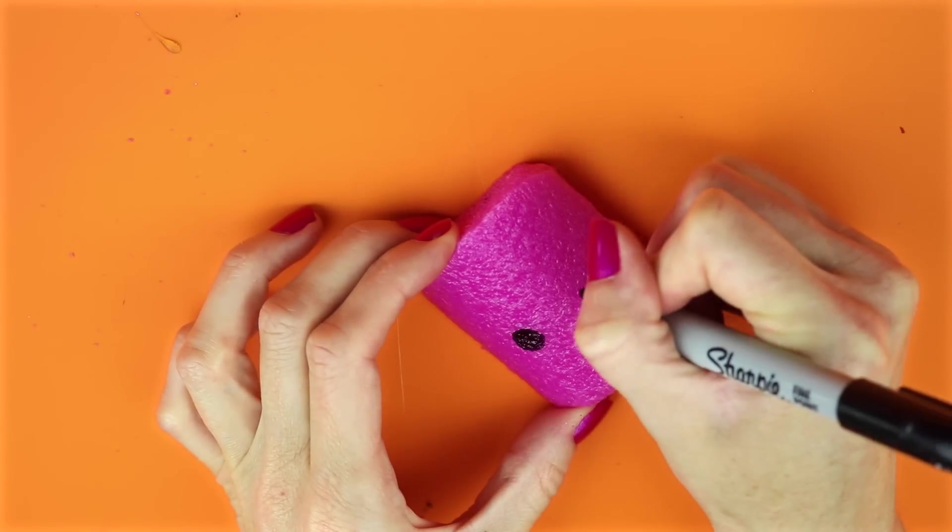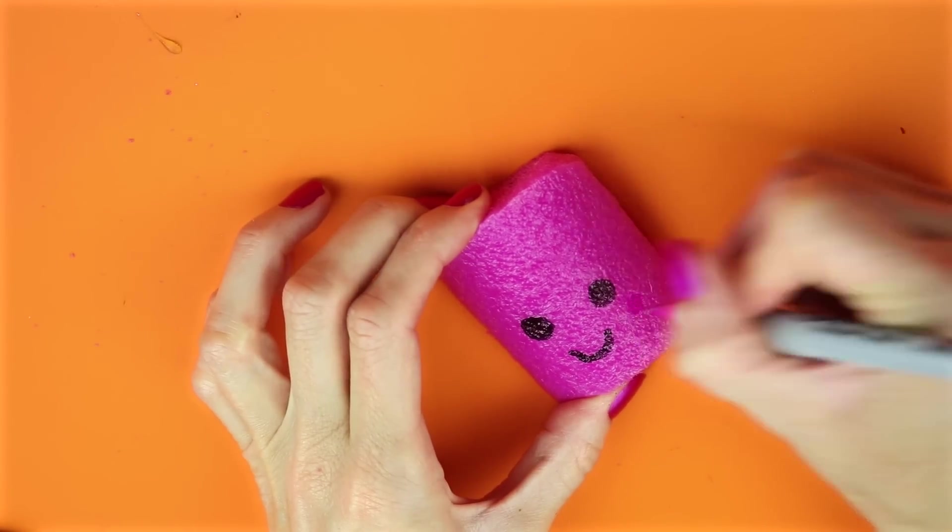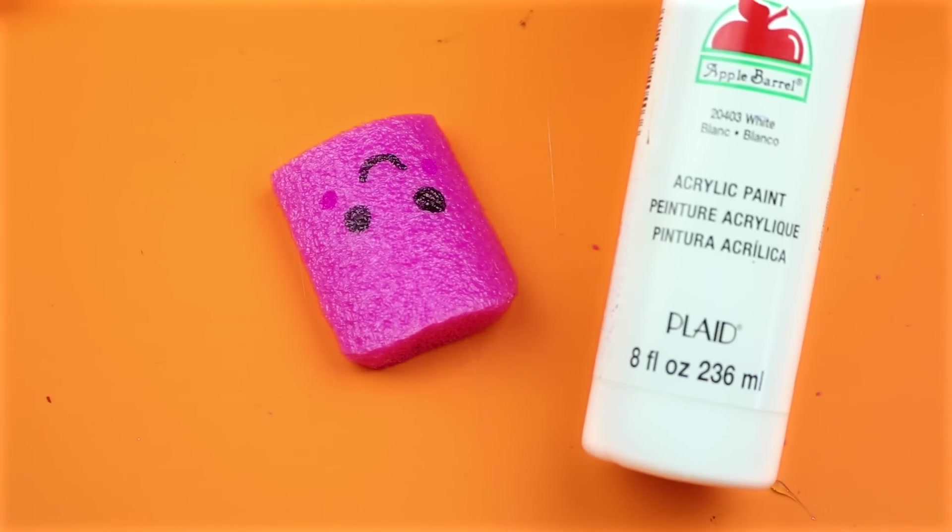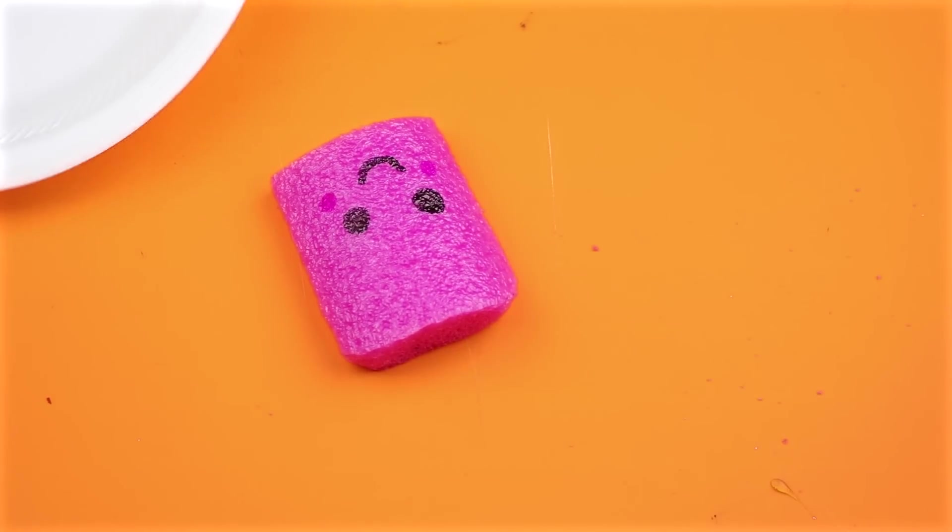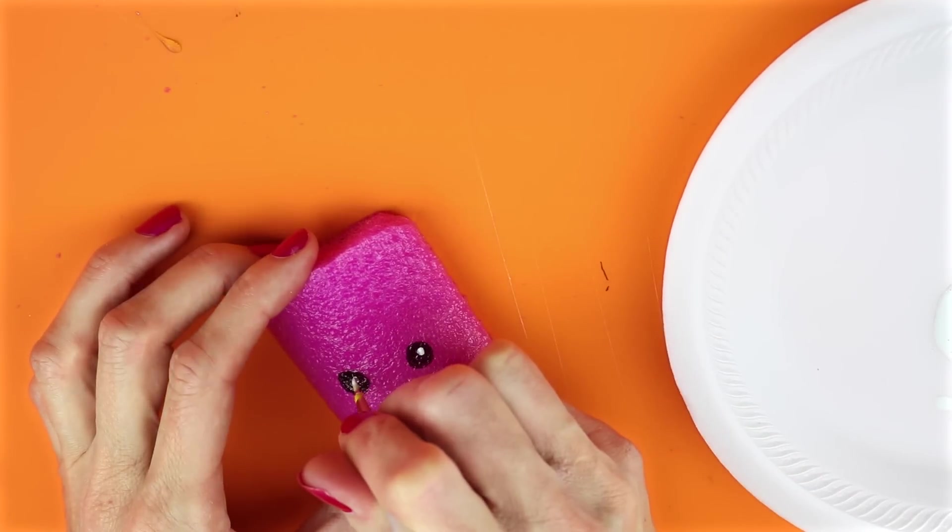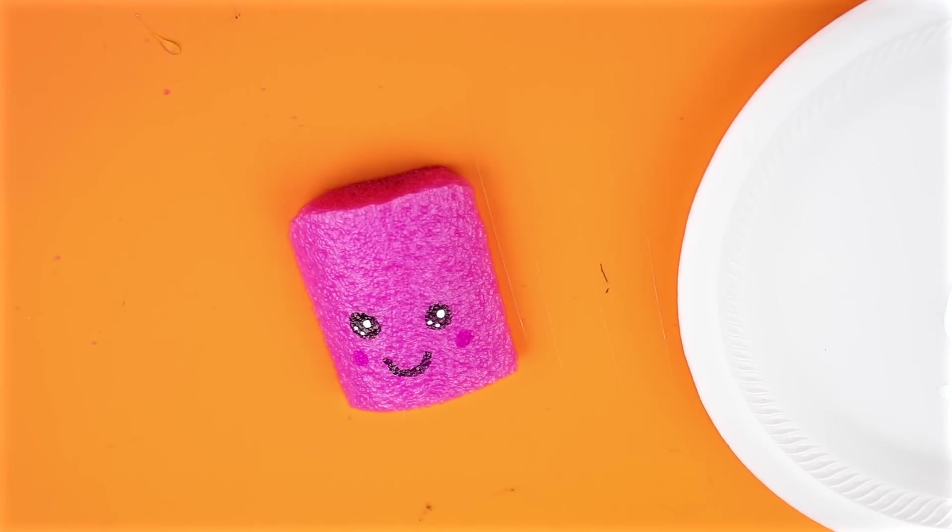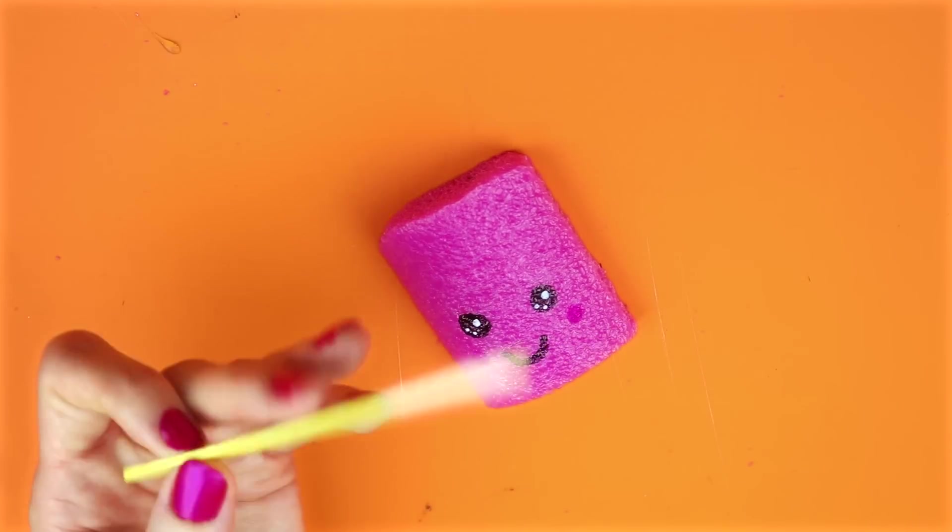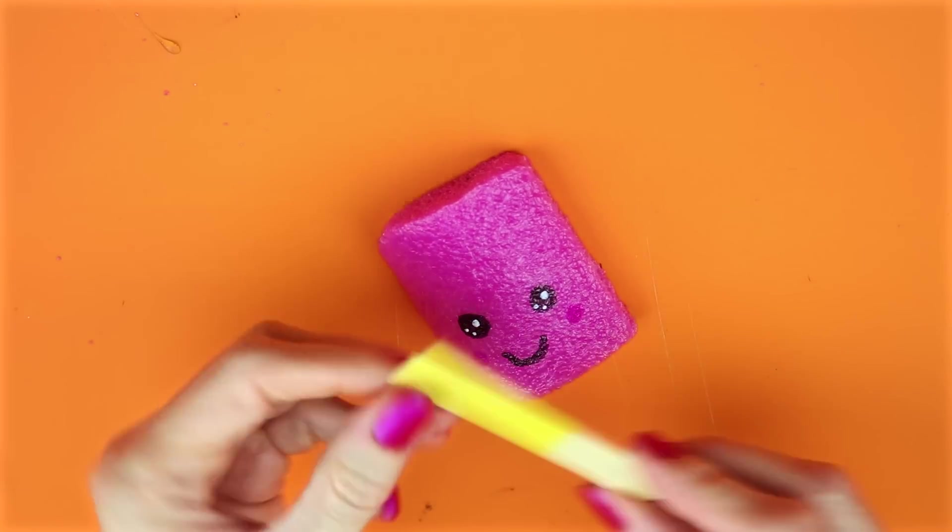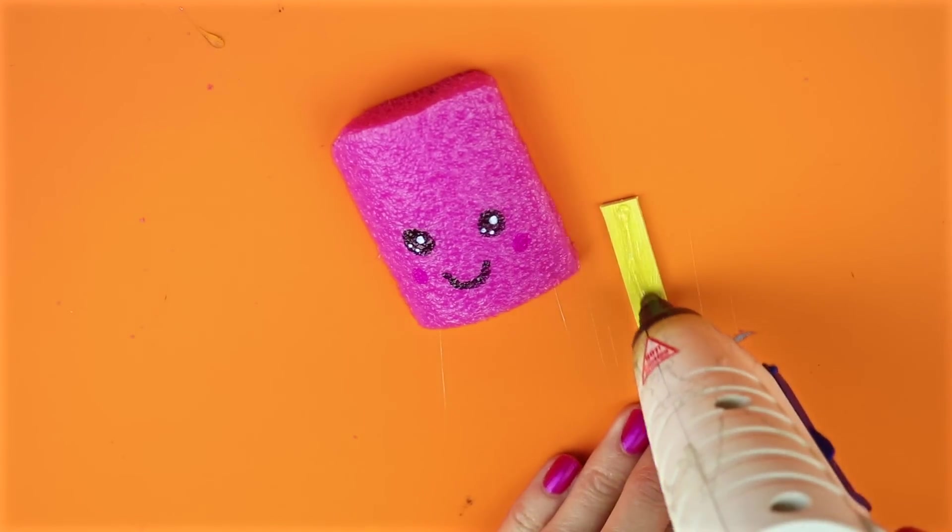With this sharpie and some paint I'm going to make my face. The next thing that you will need is a popsicle stick and you will just want to trim it so it doesn't hang over the pool noodle. Glue the popsicle stick to the pool noodle.